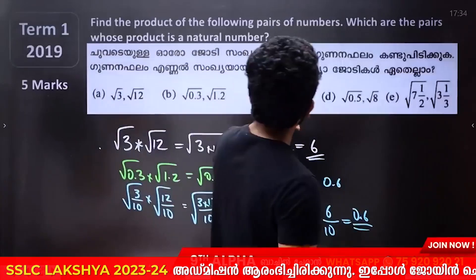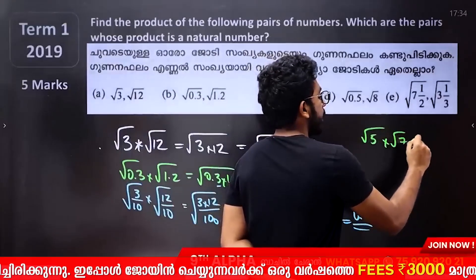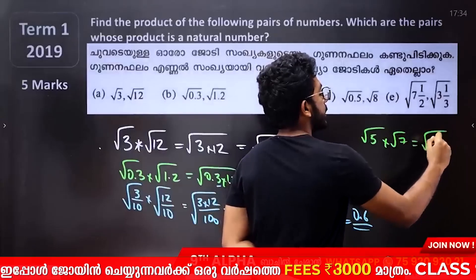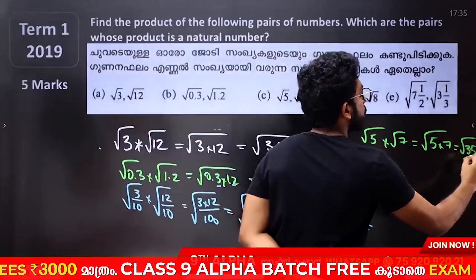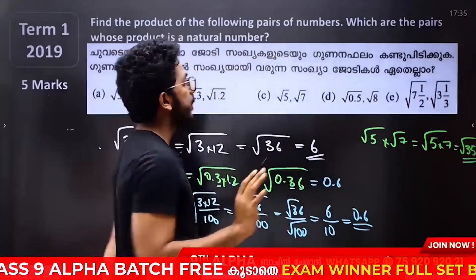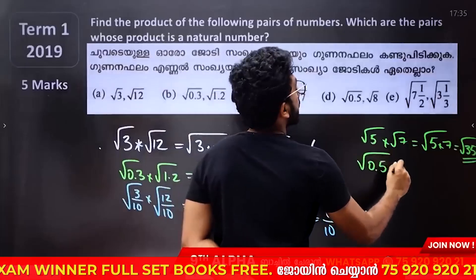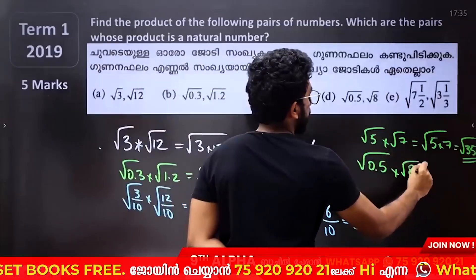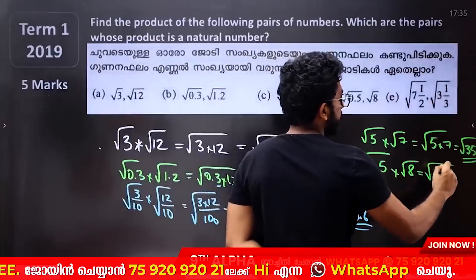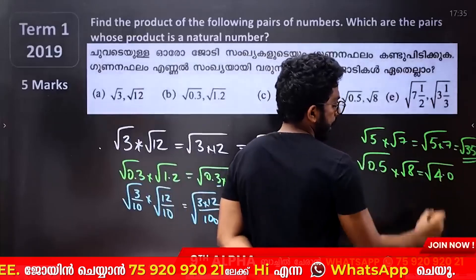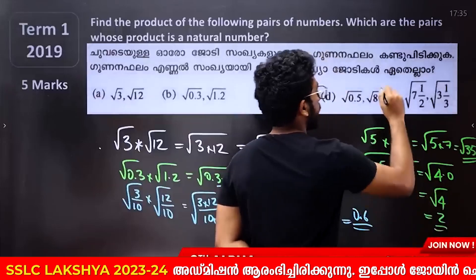If you write root 5 into root 8, you multiply to get root 40. Write 40 as 4 into 10. Then root 4 into root 10 — root 4 is 2, giving 2 root 10.